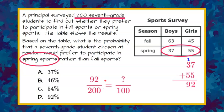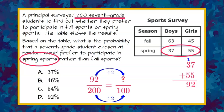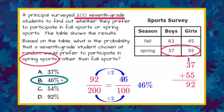Now we need to convert that to a percent because all our answer choices are percent. Instead of knowing a part of 200 as our whole, we want to know part of a hundred as a whole. If I look at this to make equivalent ratios, 200 to 100, I divided by 2. So 92 divided by 2 would make an equivalent ratio. 92 divided by 2 is 46, and 46 one-hundredths is 46 percent, giving us answer B. So 46 percent of the students surveyed prefer spring sports.